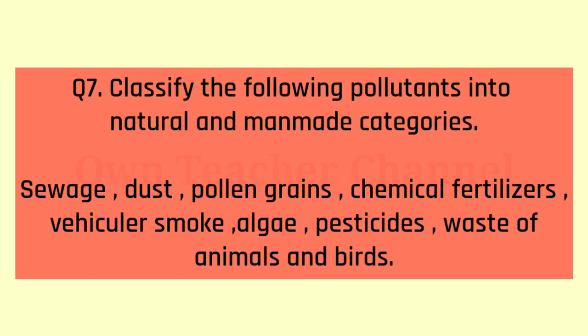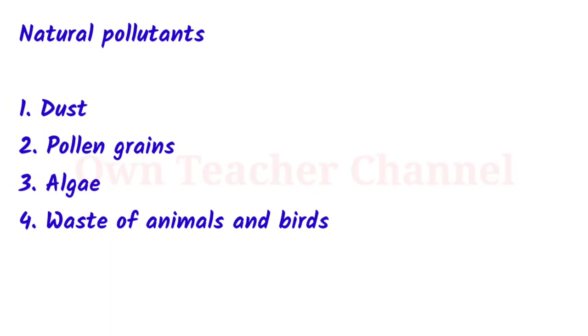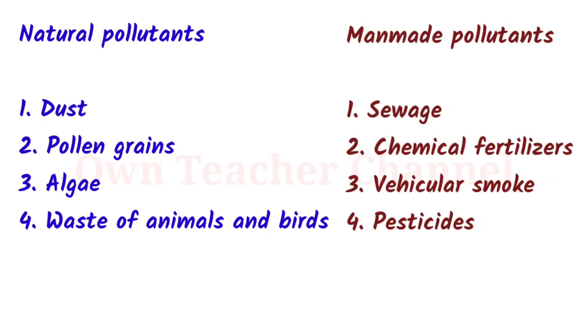Question 7: Classify the following pollutants into natural and man-made categories: sweat, dust, pollen grains, chemical fertilizers, vehicular smoke, allergy, pesticides, waste of animals and birds. Natural pollutants: dust, pollen grains, algae, waste of animals and birds. Man-made pollutants: sewage, chemical fertilizers, vehicular smoke, pesticides.